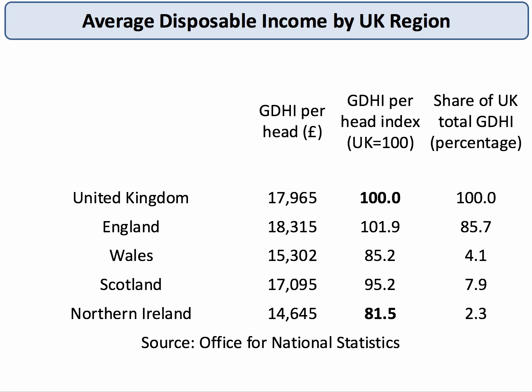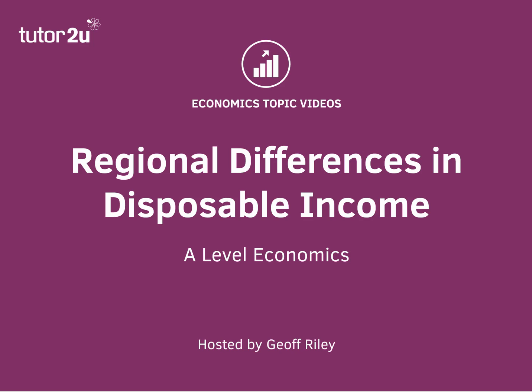Another way of looking at it is to think about the total share of household disposable income, which is quite revealing. In 2015, 86% of all household income went to people living in England, nearly 8% in Scotland, 4% in Wales, and just 2% went to people living in Northern Ireland — a reflection of the difference in the size of the economies, as well as household spending power between the four countries. So this is an important aspect of the debate over living standards.